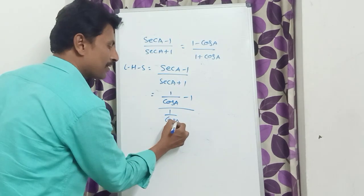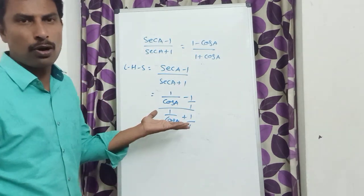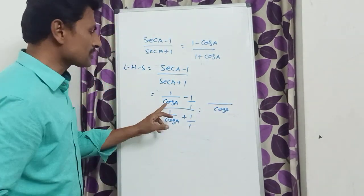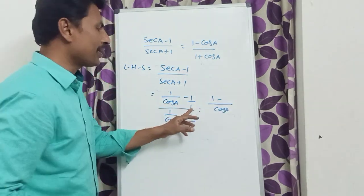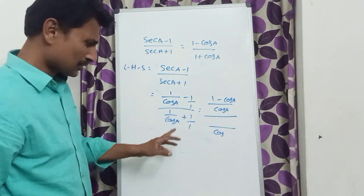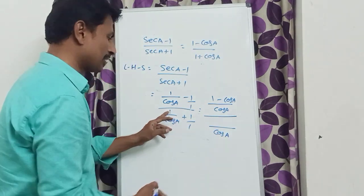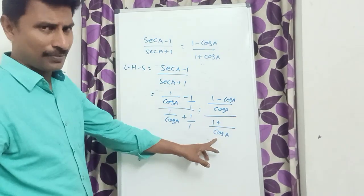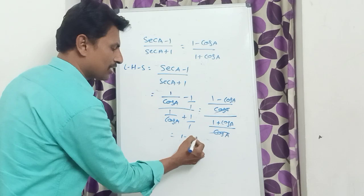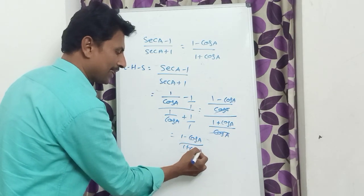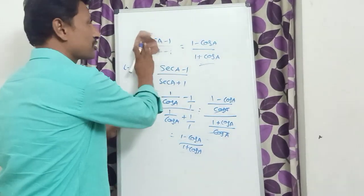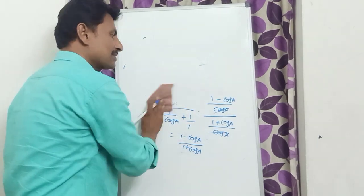Take LCM as cos A. In the numerator: (1/cos A − 1) becomes (1 − cos A)/cos A. In the denominator: (1/cos A + 1) becomes (1 + cos A)/cos A. The cos A cancels, leaving (1 − cos A)/(1 + cos A), which is the RHS. Simple problem — it depends on knowing that sec A is the inverse of cos A.